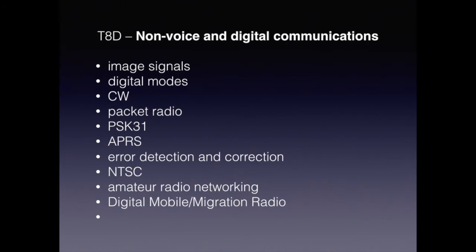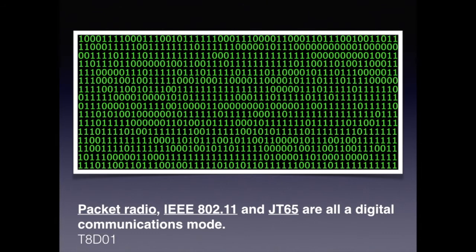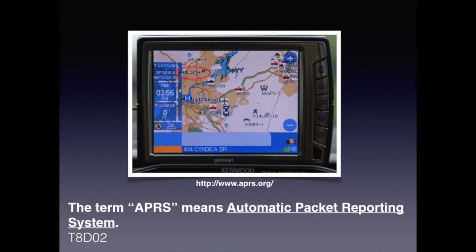In the next section we're going to talk about non-voice and digital communications such as image signals, digital modes, CW, packet radio, PSK31, APRS, error detection and correction, NTSC, amateur radio networking, and digital mobile radio. For the exam, you need to know that packet radio, IEEE 802.11, and JT65 are all digital communication modes. Packet radio is packets of information; IEEE 802.11 is a wireless internet standard; and JT65 is a type of digital packet mode.